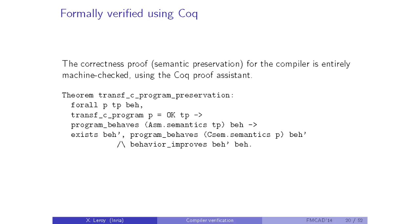The composition of all passes — the whole compiler — has the semantic preservation property. We use the Coq proof assistant to write specifications, conduct proofs, and have them checked. There is basically no way this work can be done just on paper — it would be too big.